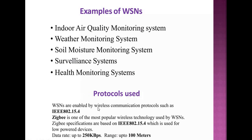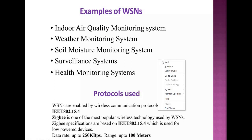The protocols used in wireless sensor networks enable the wireless communication process, such as IEEE 802.15.4. Zigbee is one of the most popular wireless protocols used by WSNs. The data rate can be up to 250 kbps, with a range of up to 100 meters.